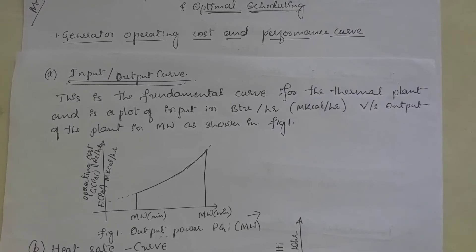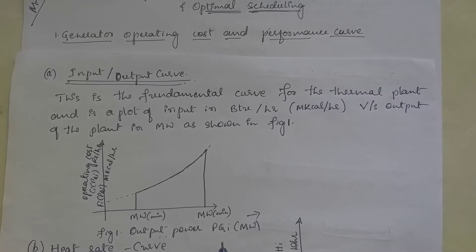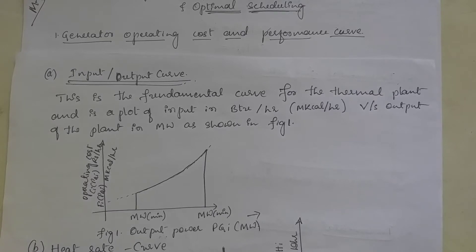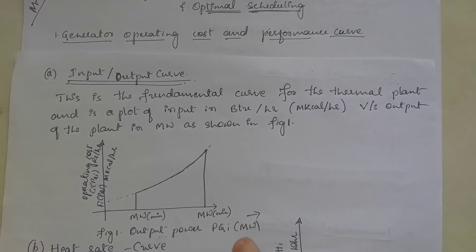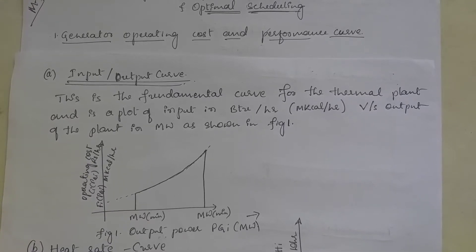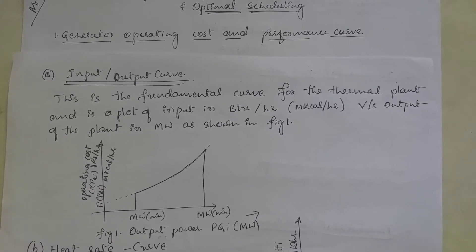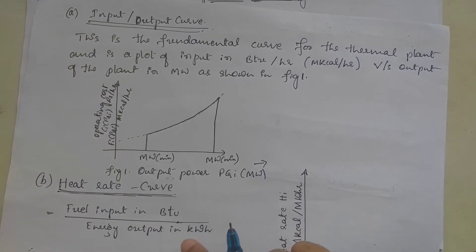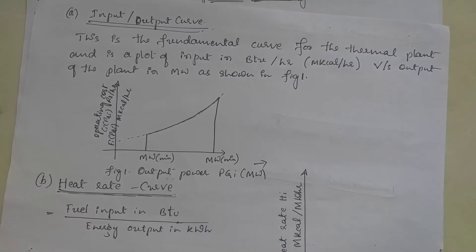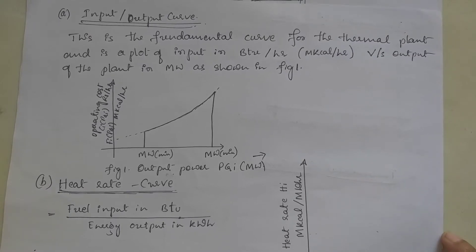Next, we consider the heat rate curve, indicated by Hi(PGi), which is the heat energy in m kilocalorie needed to generate 1 unit of electrical energy in megawatt hour. Heat rate is the ratio of fuel input in British thermal units to the energy output in kilowatt hour. It is the slope of the input versus output curve at any point.